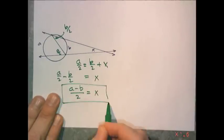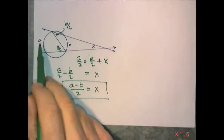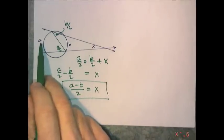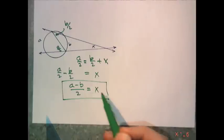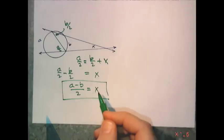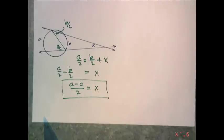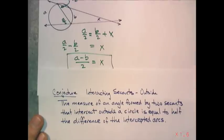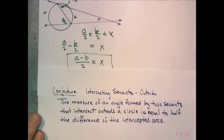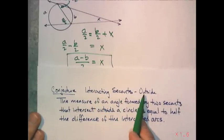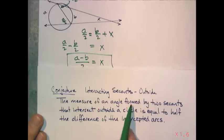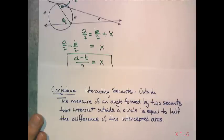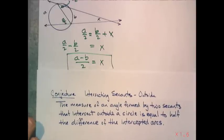What is that in words? Basically, the larger arc minus the smaller arc divided by 2 will be the angle that is of the intersection of the two secants. I wrote it up as a conjecture. The conjecture: intersecting secants outside the circle. The measure of an angle formed by two secants that intersect outside the circle is equal to half the difference of the intercepted arcs. Put it in your notes and use it wisely.